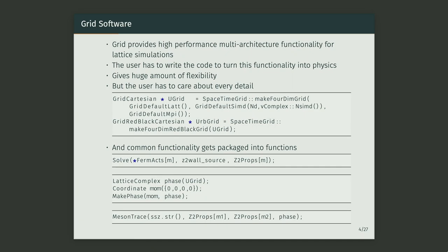However, there are some downsides. The user has to care about every minute detail. For example, you have to do things like creating Cartesian grids, and it cares about the SIMD layout and the MPI. These are things we'd rather not worry about when designing an application that does inversions or contractions. And you often get long strings of operations, applying functions to inputs and creating various lattice type objects — lots of applying functions linearly.